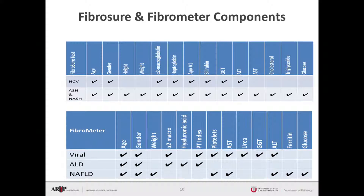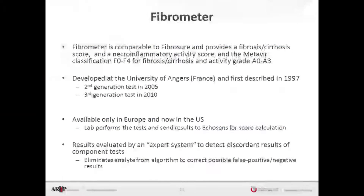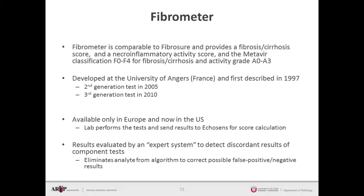In the family of FibroMeter testing, there is one specifically for viral applications — both HCV and HBV. Alcoholic liver disease and non-alcoholic fatty liver disease are two separate applications with different markers and patient demographics. In non-alcoholic fatty liver disease, for example, additional height and weight are included in FibroSure and weight in FibroMeter, as those are important in those populations. FibroMeter provides a fibrosis-cirrhosis score, a necroinflammatory activity score, and the Metavir classification F0 to F4 for fibrosis-cirrhosis and an activity grade of A0 to A3. It was first developed at the University of Angers in France, and we are now several generations into this test.